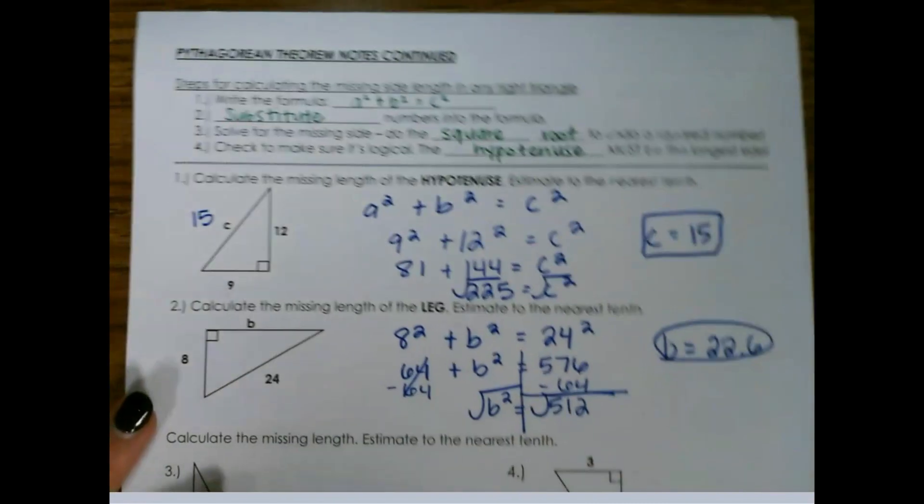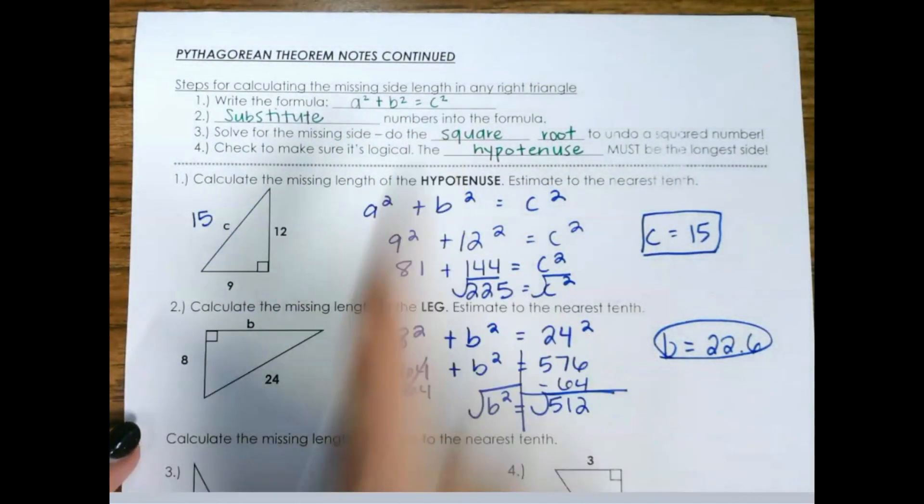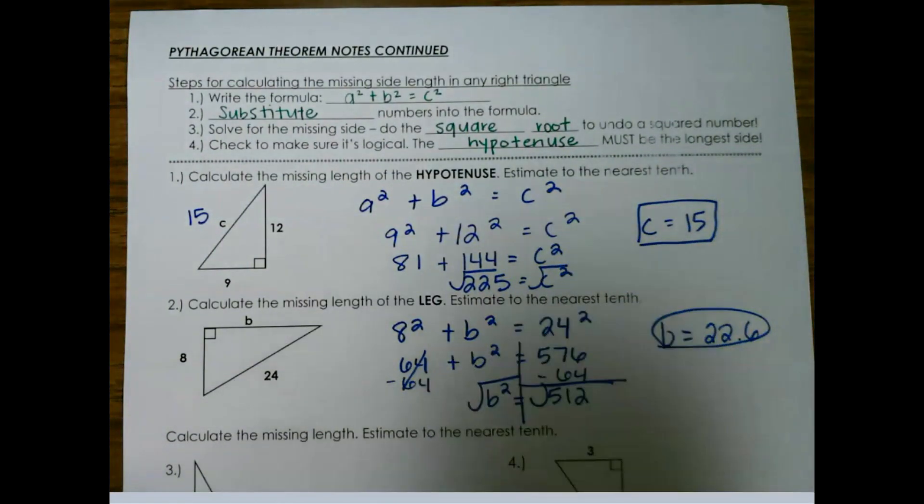So again, don't forget your formula is a squared plus b squared equals c squared. And you always just substitute the numbers in and solve for what you're missing.